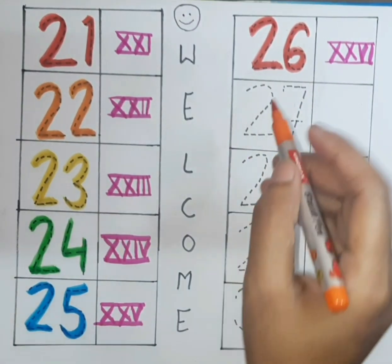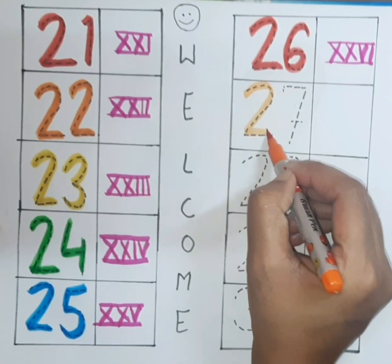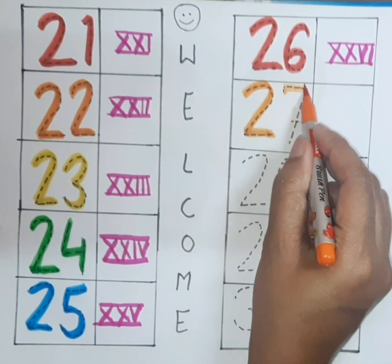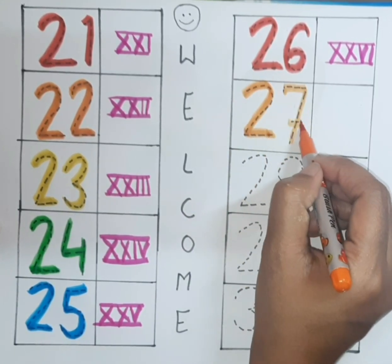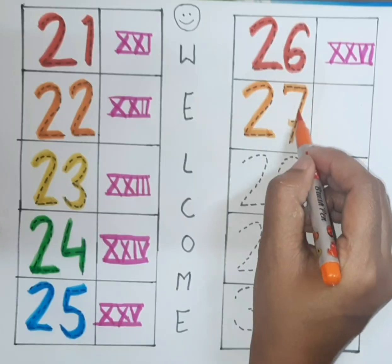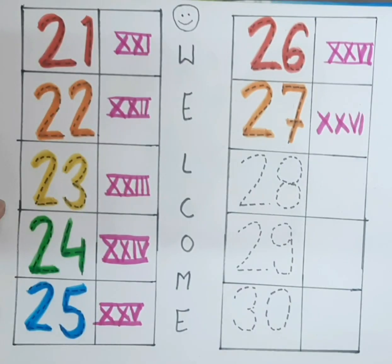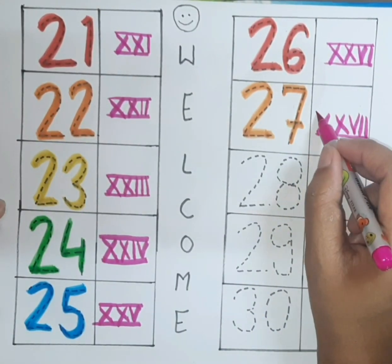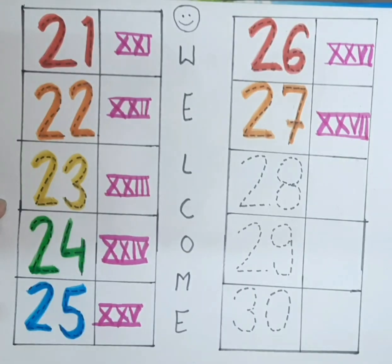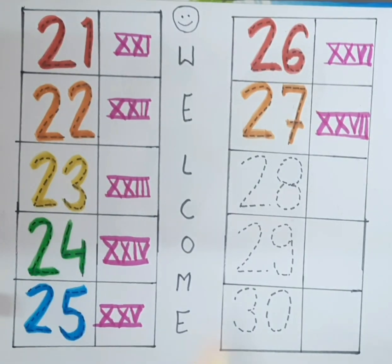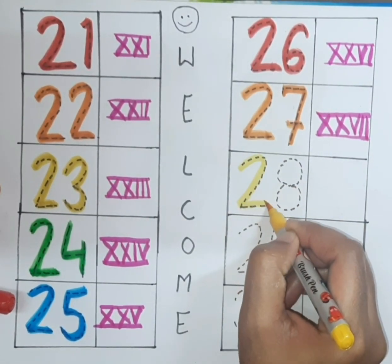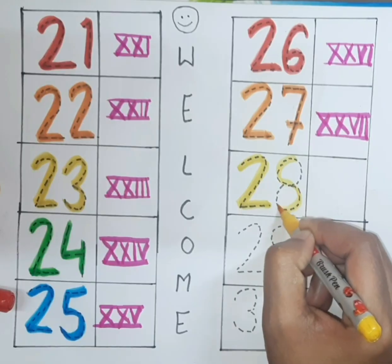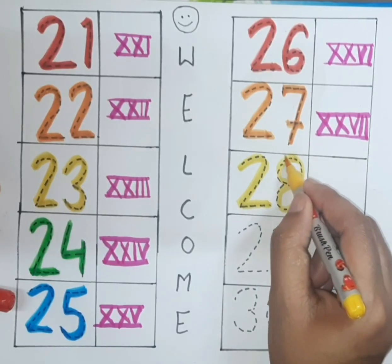What comes next? Twenty seven. This is twenty seven. In roman, double X, V, I, I. What comes next? Twenty eight. This is twenty eight.